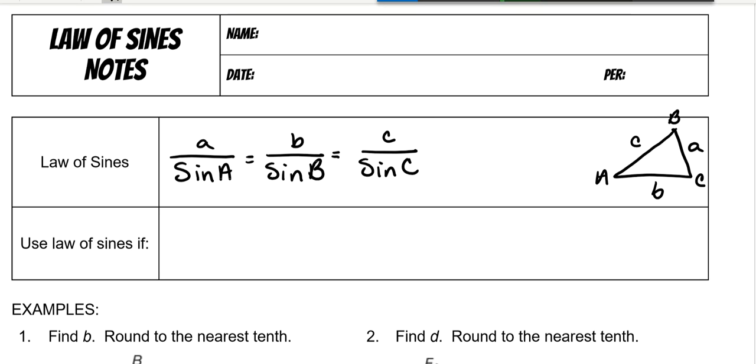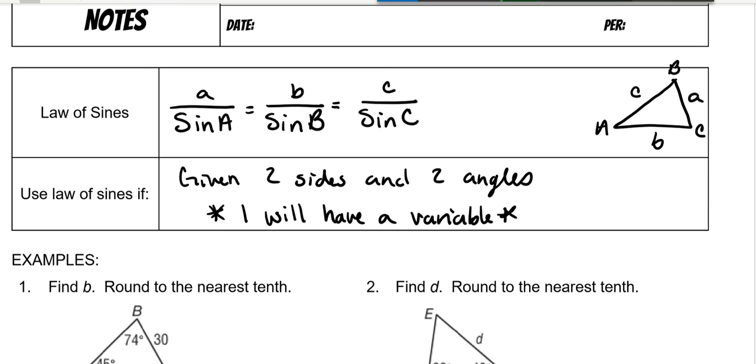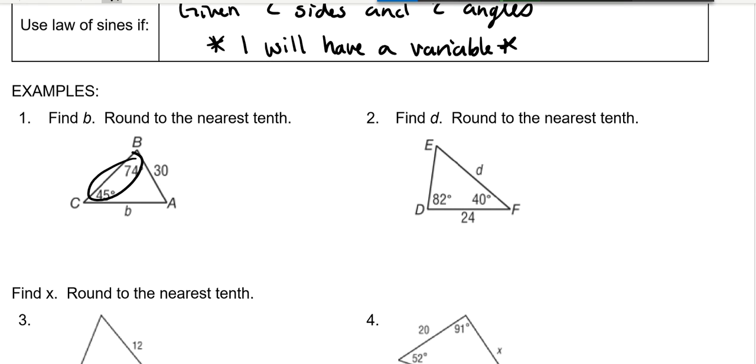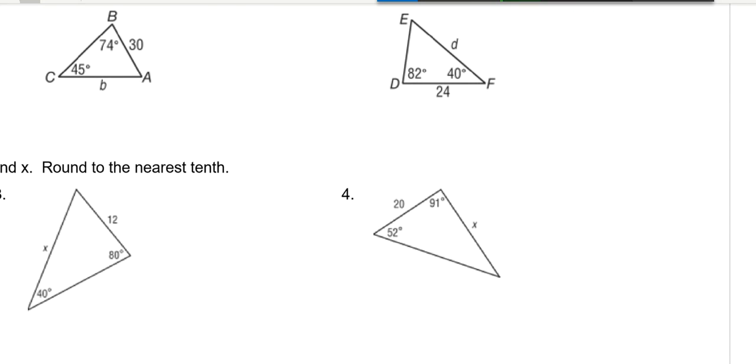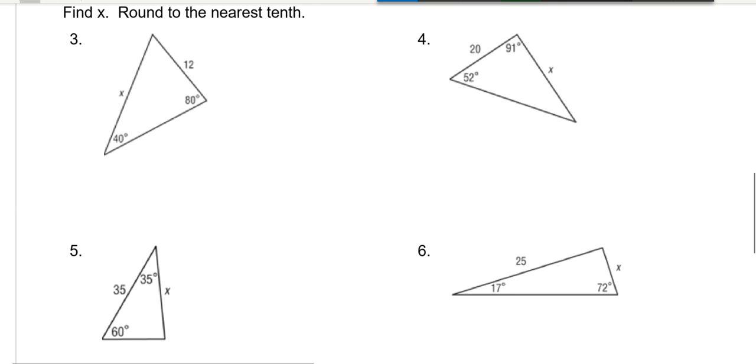Now you're only ever going to need two of these, you never will use all three, and you're going to set up proportions and cross multiply. So use the law of sines if you are given two sides and two angles. The difference is one will have a variable. So what that means is on this first problem, we're given two angles and two sides, but one of the sides has a variable on it.